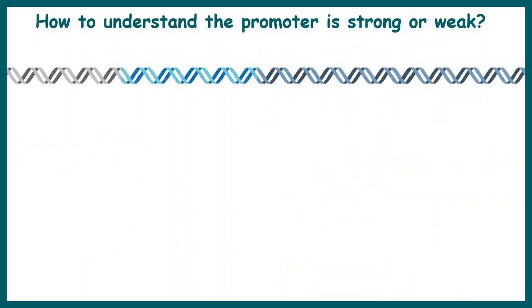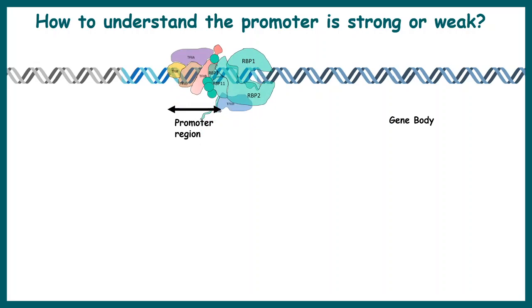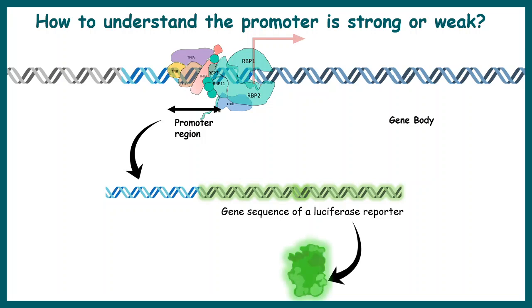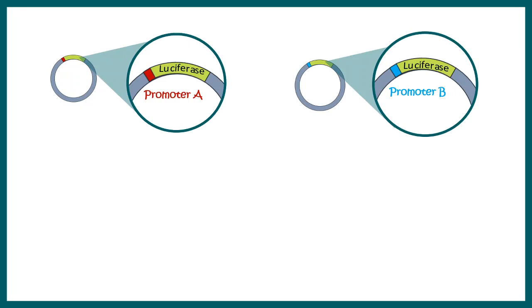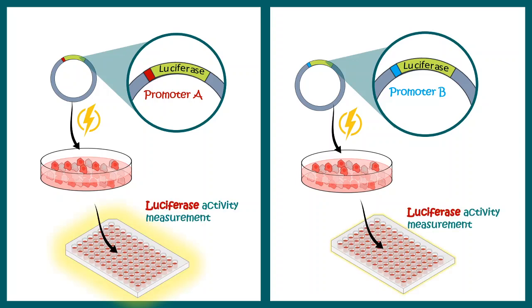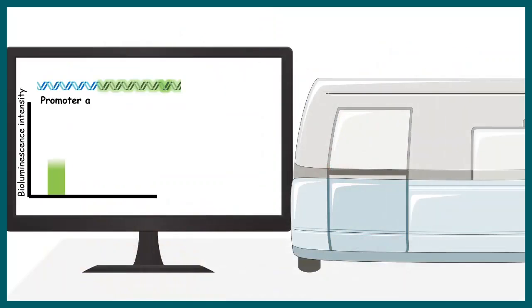We might also ask whether a promoter is strong or weak. In the promoter, RNA polymerase is recruited and when the gene is transcribed, mRNA is produced. This particular promoter is cloned upstream to a reporter sequence and the reporter activity tells us about the strength of this promoter. Here we have promoter A and promoter B — underneath both we have the luciferase reporter gene. We transfect into the same cell type with the same number of cells and measure luciferase activity by adding substrate. In this example, promoter A is much stronger than promoter B, so bioluminescence activity is much stronger for promoter A.